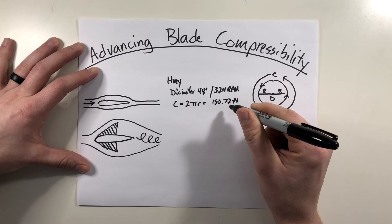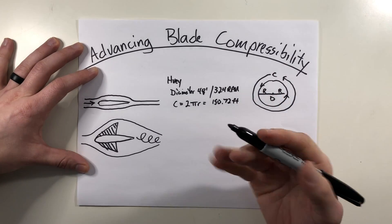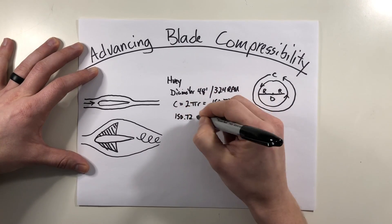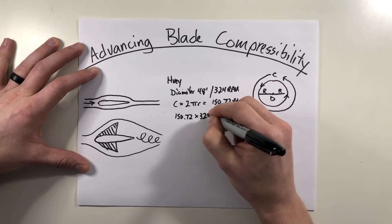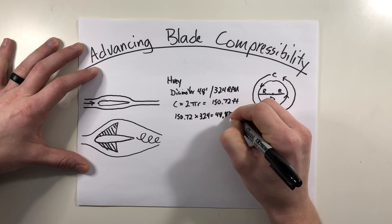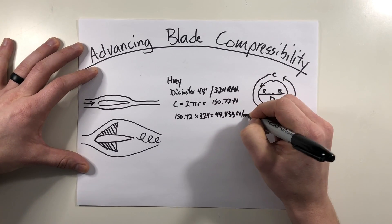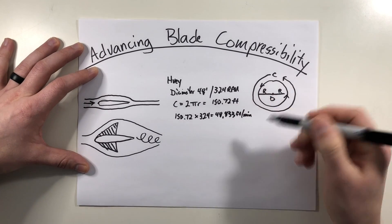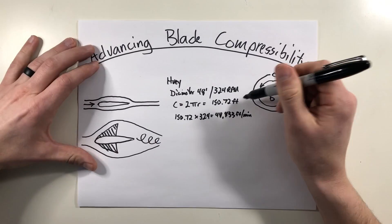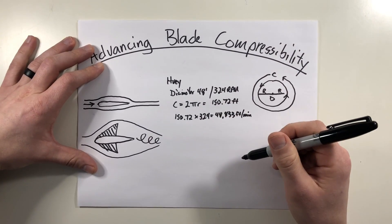From here, we can calculate the rounds per minute and get the feet per minute that the blade is traveling. So this is going to be that 150.72 times 324 rounds in a minute equals 48,832 feet per minute. And that's going to give us a speed. So now we had a distance and a number of revolutions or a rate. Now we have a speed of the blade tip as it travels around the helicopter.